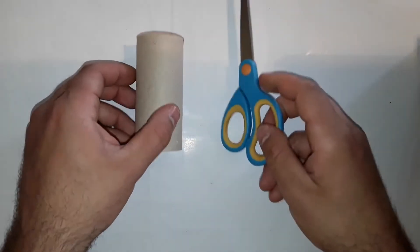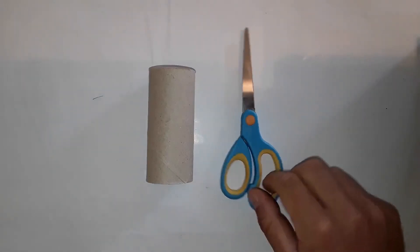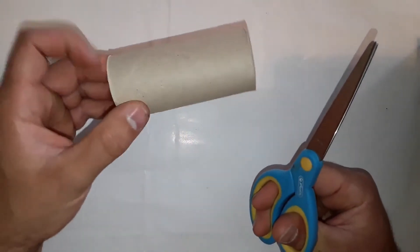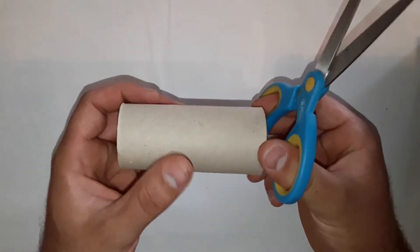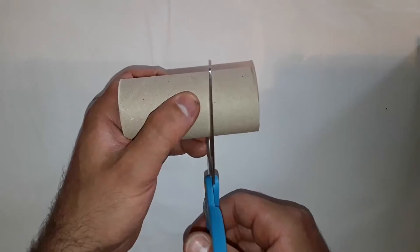In the first step we begin with cutting. For this we need the toilet paper roll and scissors. Now we're going to cut the toilet paper roll into three equal pieces.